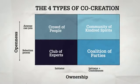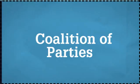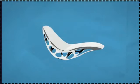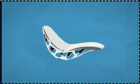The coalition of parties is when companies collaborate by bringing knowledge, investments, or other assets and skills to the table to reach a shared goal that they could never achieve alone. For example, NASA teaming up with our chair producer to make super light, super strong chairs based on space technology.